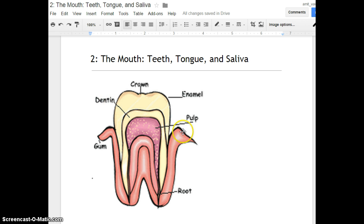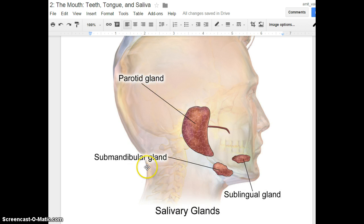So learn that the tooth has parts on the inside, like the dentin, the pulp, and the root, and then on the outside, like the crown and the enamel. Let's scroll down to another picture.